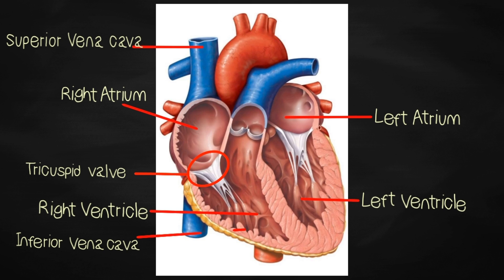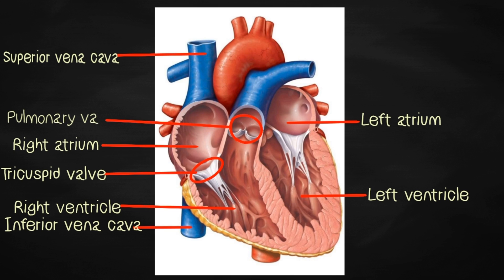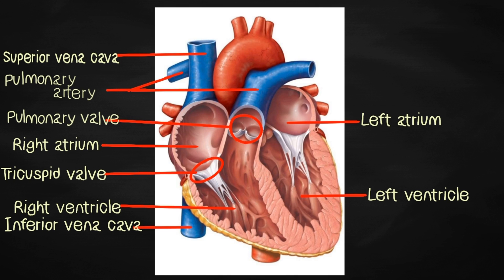The tricuspid valve opens during atrial contractions and closes during ventricular contractions. The right ventricle receives deoxygenated blood from the right atrium and contracts to send it to the pulmonary circulation for oxygenation. The pulmonary valve prevents backflow of blood from the pulmonary artery to the right ventricle; it closes during atrial contractions and opens during ventricular contractions. Pulmonary arteries are the only arteries in the body that carry deoxygenated blood — they are arteries in the sense that the blood they carry is moving away from the heart.